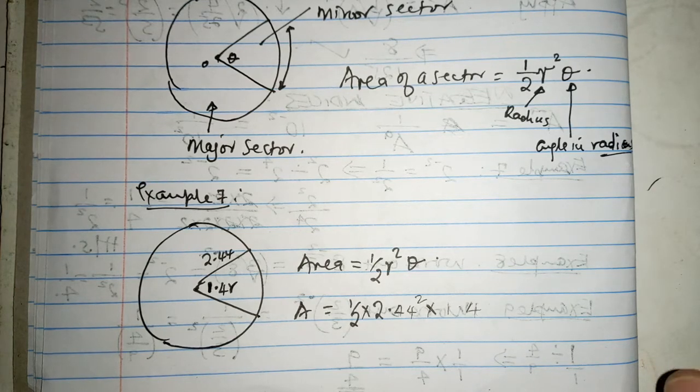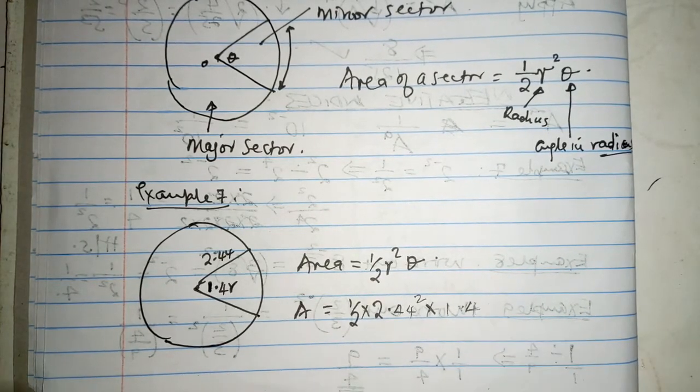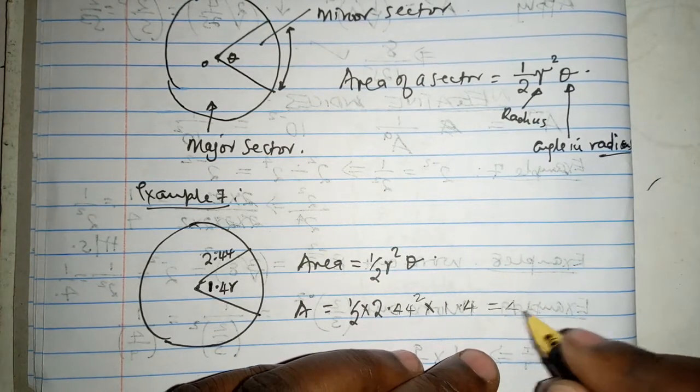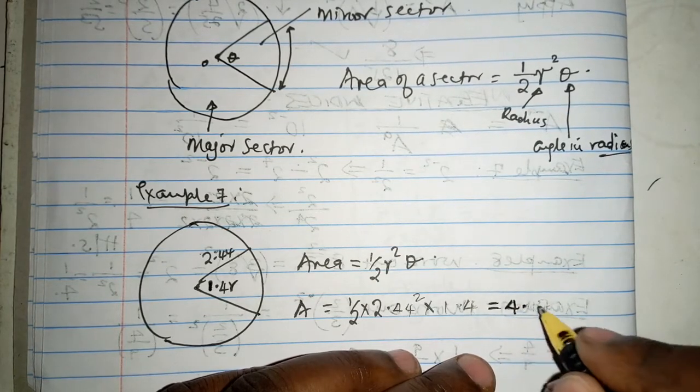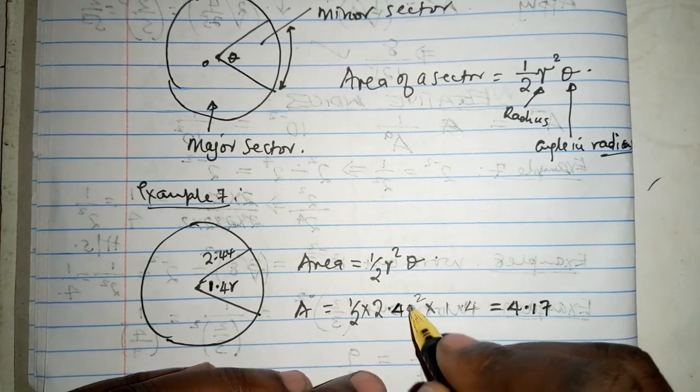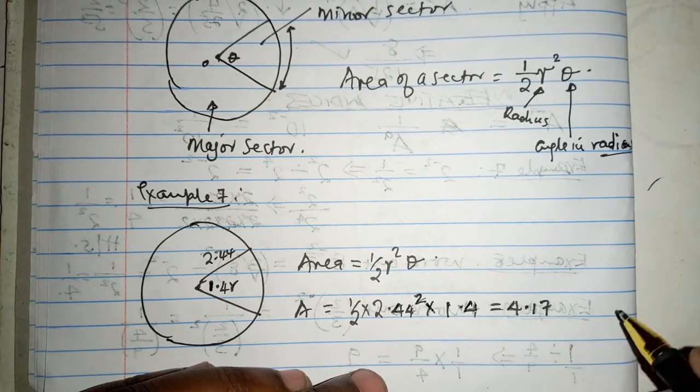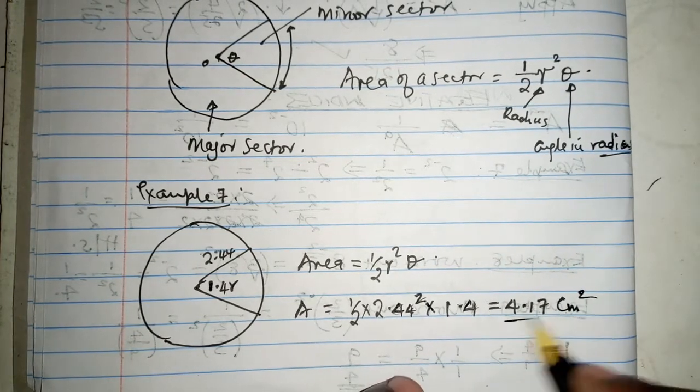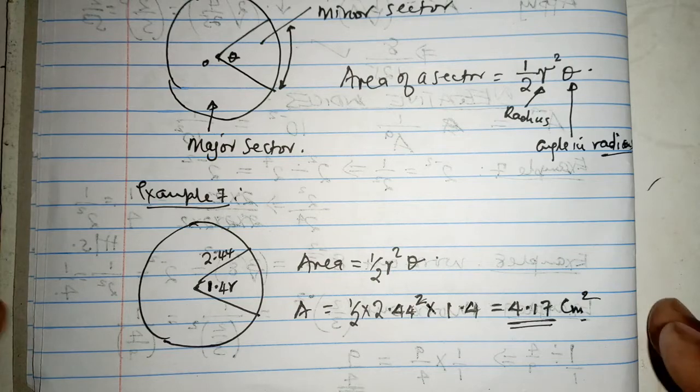So, if you multiply out this, you realize that this is going to give us 4.17, it's going to give us 4.17, let me make this visible, 1.4, 4.17, of course, centimeters squared, because the units were in centimeters, that is just like it, how we get the area of a sector.